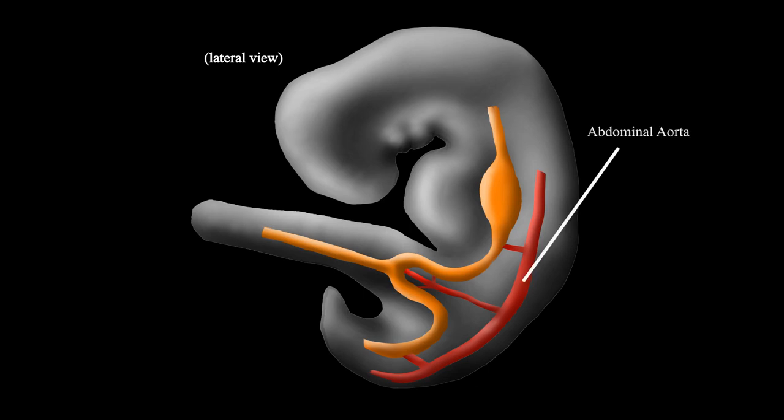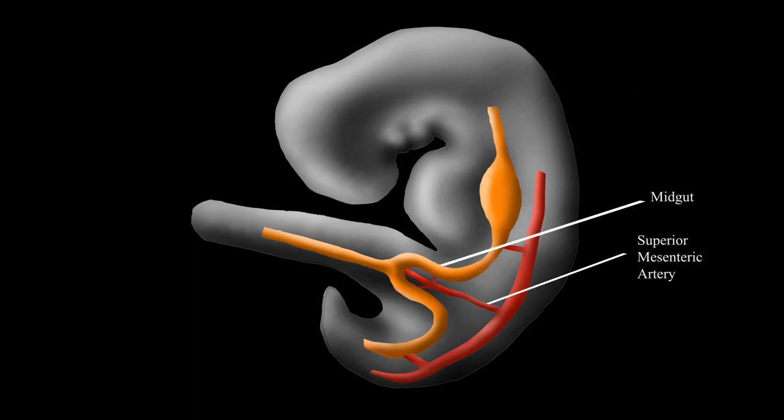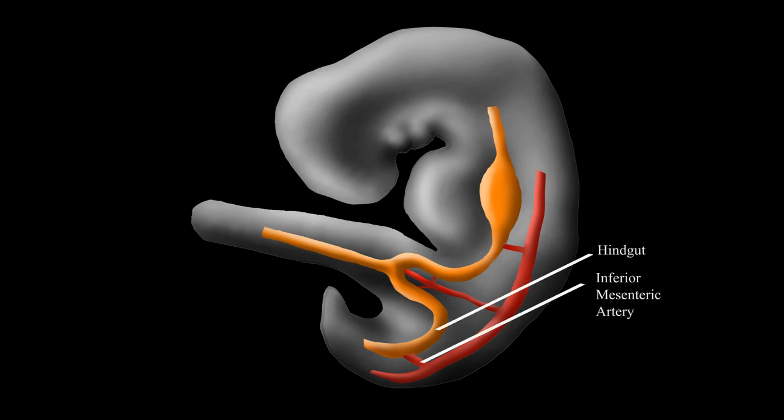Arterial blood to the gut tube is supplied by the abdominal aorta. The gut tube is composed of the foregut, with blood supply from the celiac artery, the midgut, with blood supply from the superior mesenteric artery, and the hindgut, with blood supply from the inferior mesenteric artery.